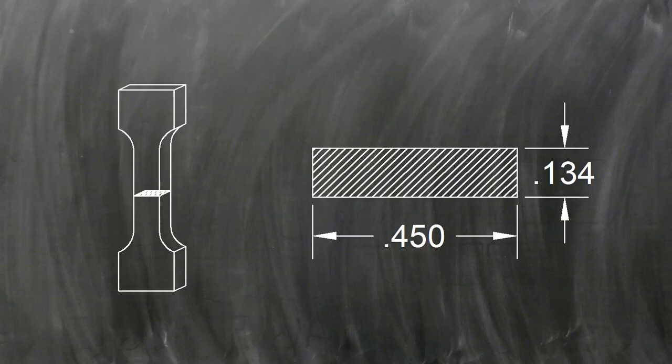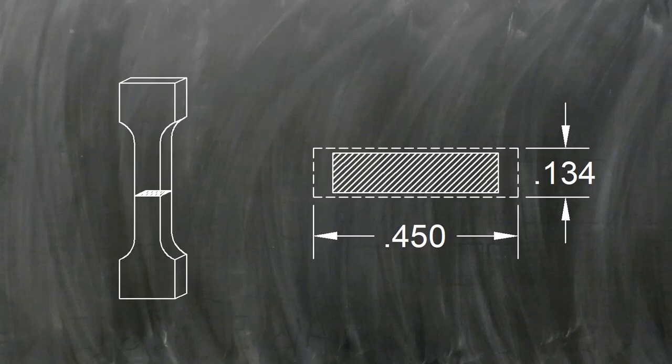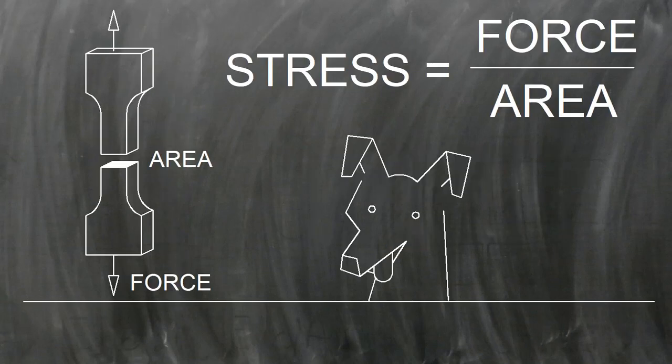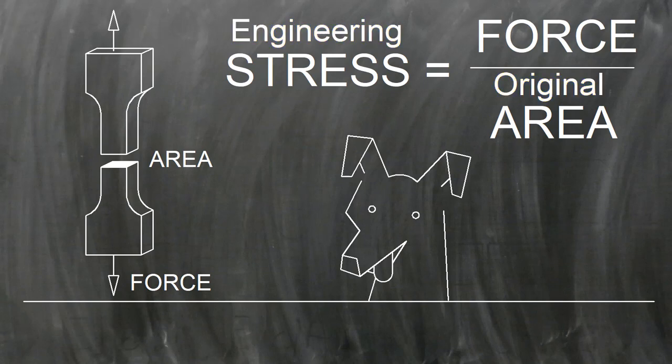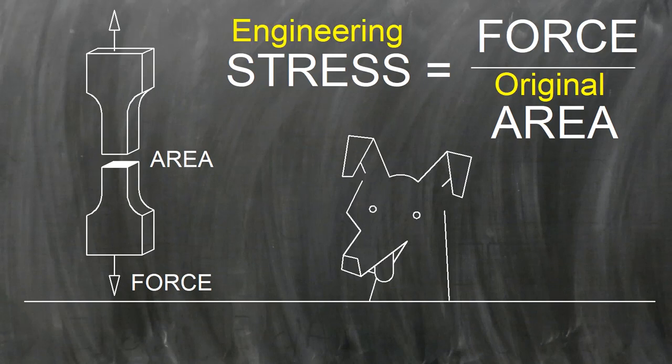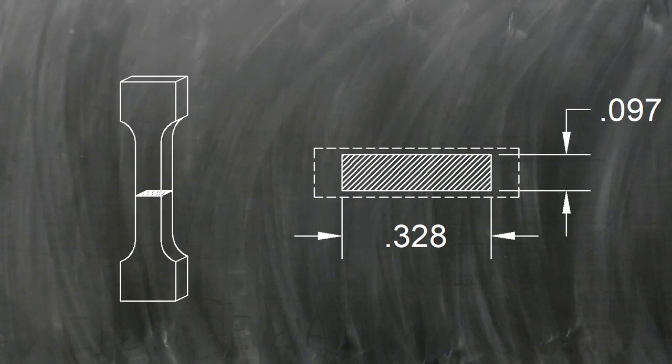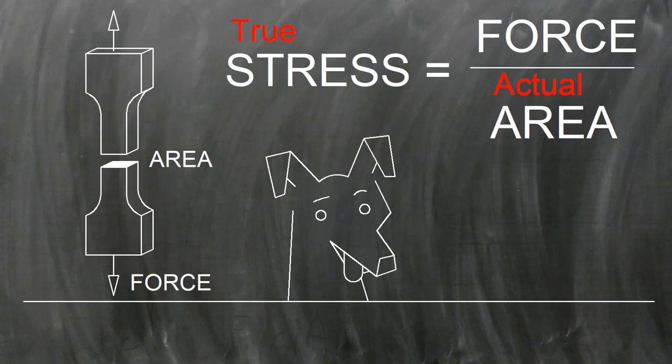When you only measure the cross-sectional area at the beginning of the test and you use that value for all your stress calculations, you're calculating what is called engineering stress. In contrast, when you re-measure the cross-section for each stress measurement, you're finding true stress.